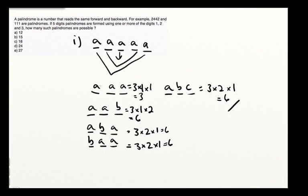If you add these up, you get 3, 9, 15, 21, 27 possibilities total. So you can easily do this in under two minutes — it's not a terrible way to solve the problem. However, it's not as fast as it could be done, so let me show you a quicker route.